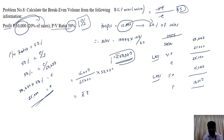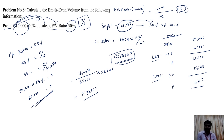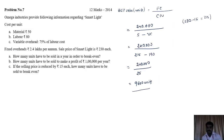This is a way to calculate the break-even volume with only two pieces of information. This kind of question may appear in the examination — very interesting. When all information is direct it is easy to calculate, but here the information is indirect. Thank you so much for watching the class. We will meet in the next class.